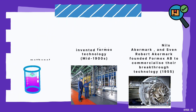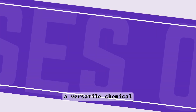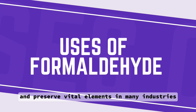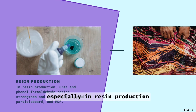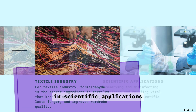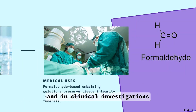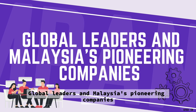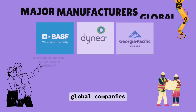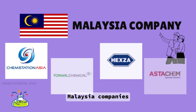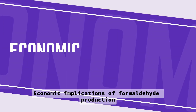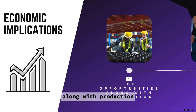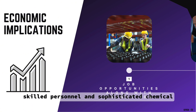Formaldehyde is a versatile chemical that helps make essential materials and preserve vital elements in many industries, especially in resin production, the textile industry, scientific applications, and clinical investigations. Global leaders and Malaysia's pioneering companies use the Formix process.